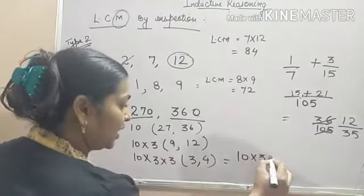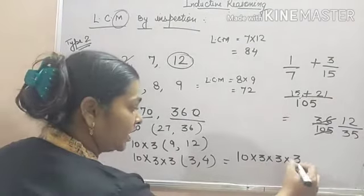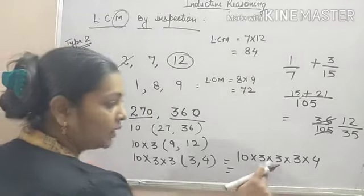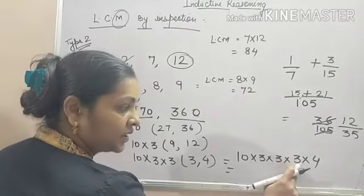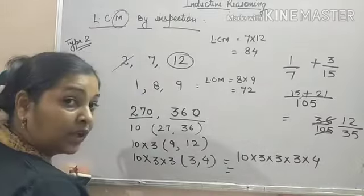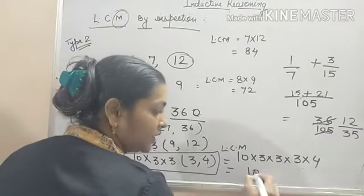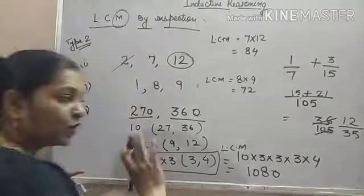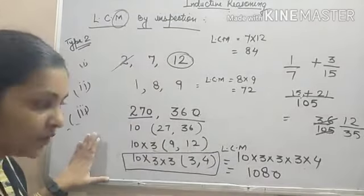10 into 3 into 3 into 3 into 4. This is the product. Find out 3, 3's are 9, 9, 3's are 27 and 27, 4's are 1, 0, 8, 0. So, the LCM will be 1080. So, you can find the LCM in this way.